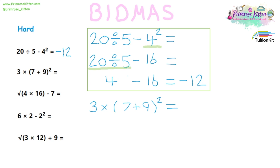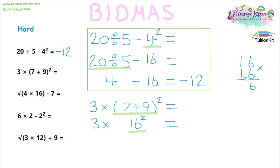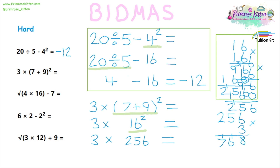Our next sum involves brackets, indices, addition and multiplication. The brackets are the first thing we need to do, which is seven plus nine. Now it may seem like we are doing an addition, but because it's inside the brackets it needs to come first. So our sum now becomes three times 16 squared. After the brackets come the indices, so the next thing is 16 squared. If this is on a non-calculated paper, you'll need to do the long multiplication — if you struggle with that, check out my separate video. 16 squared gives us 256, and three times 256 gives us 768.